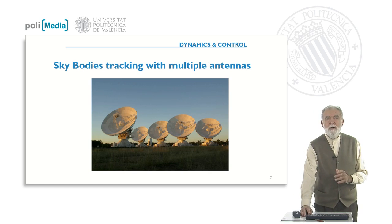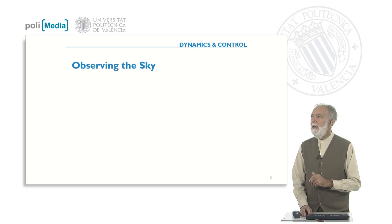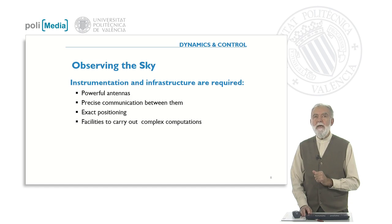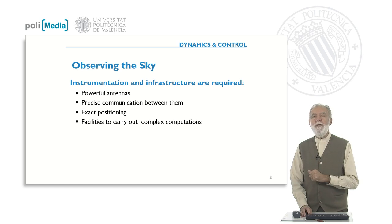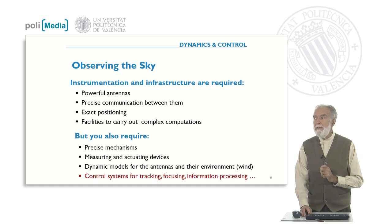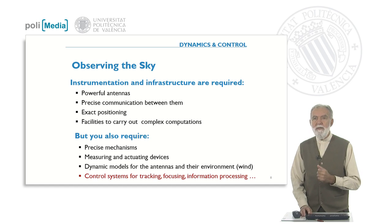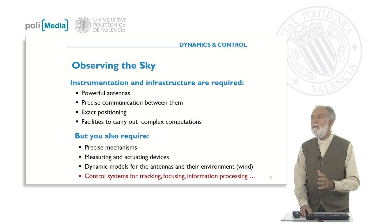Another example is a system for tracking stars, planets, and sky bodies in general. We use multiple antennas and need a lot of infrastructure, many experts, powerful antennas, and precise communication between them. We need to position these antennas in exact positions and need facilities for complex computations, since the signals received are not very clean and must be filtered. We also require precise mechanisms to move the antennas, measuring and actuating devices, dynamic models of the antennas and the environment including wind, and control systems for tracking, focusing, and information processing.